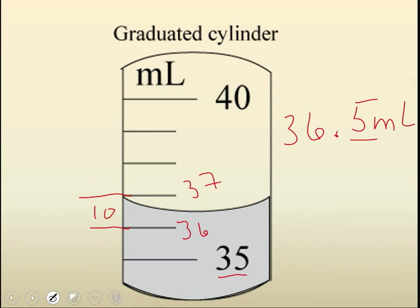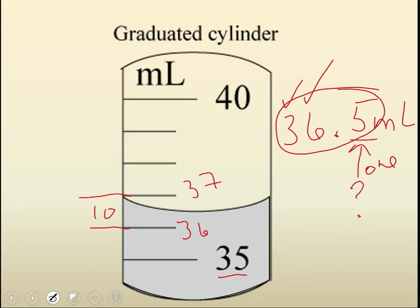You may say 36.4 or 36.6 — I can't see you getting a number outside that range. These two digits — the 3 and the 6 — I am absolutely, positively certain of. The last one I'm estimating. That's where significant figures come in: you take all the numbers you're absolutely sure of, and only have one number that you're not sure of. I wouldn't say I think this is 36.47, because I can't break that space into 100 spots accurately, but I can break it into 10. So this number has three significant digits.